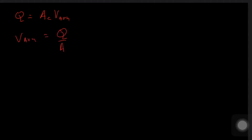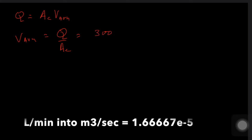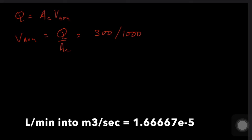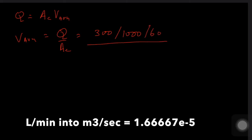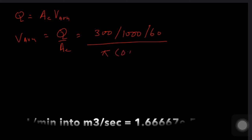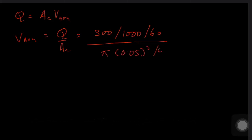The average velocity V_avg equals flow rate over cross-sectional area. Flow rate is 300 liters per minute, so dividing by 1000 and by 60 (to convert to m³/s), then dividing by π(0.05)²/4, the average velocity comes out to be 2.55 m/s.